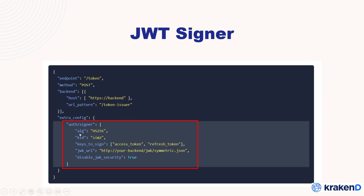The JWT signer gives us a few things: the algorithm, which needs to be an HS algorithm — you can assign any algorithm there. Currently by default it uses HS256. The 'kid' (key ID) is a unique identifier — every time the backend symmetric file is hit, it matches based on the key ID inside the backend for the security key. There is also a key to sign the access token and refresh token, the JWK URL, and also a disable JWK security option — if false, it will strictly check HTTPS.